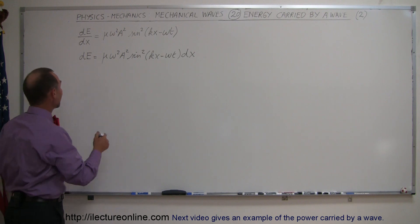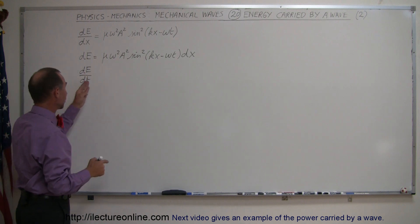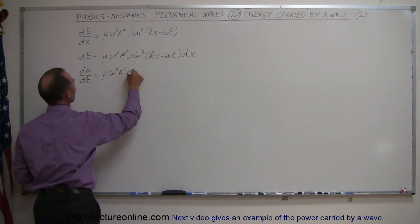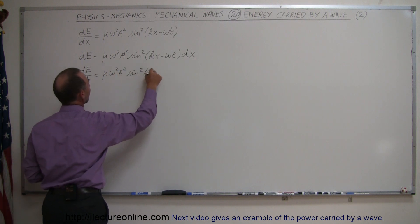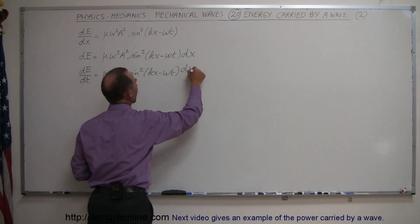We're going to now make it as a function of time, so dE/dt, which is the amount of energy transported per unit time, is equal to mu omega squared a squared sine squared of Kx minus omega t, and this will now be dx/dt.